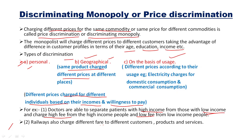Price discrimination on the basis of usage means a monopoly firm tends to charge different prices according to the customer's usage. A simple day-to-day example is electricity — electricity charges for domestic consumption versus commercial consumption have different slab rates depending upon usage. This is how price discrimination is followed based on these three aspects.